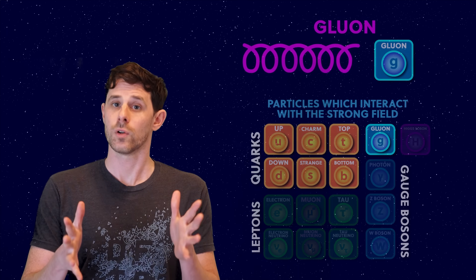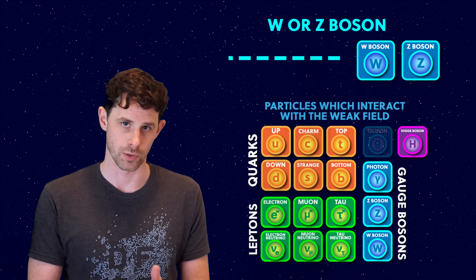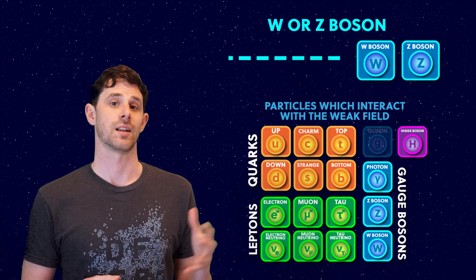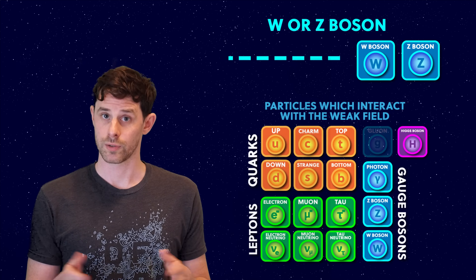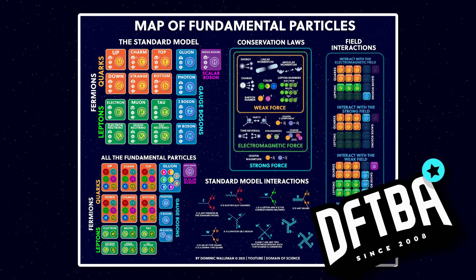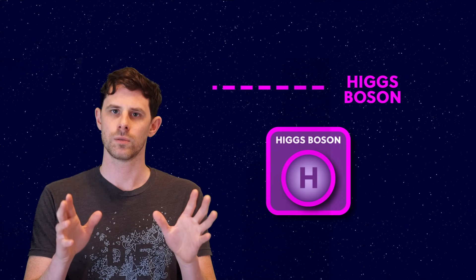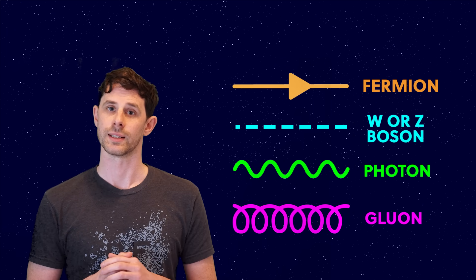Now onto the weak force. The mediators of the weak force are the W and Z bosons, and are represented with a dashed line. All particles interact with the weak force, apart from the gluons. If all this is a bit much to take in, don't worry, I've made a companion poster which you can study in your own time. The link is below. So finally the Higgs boson, which we also use a dashed line for, and those are all the lines.